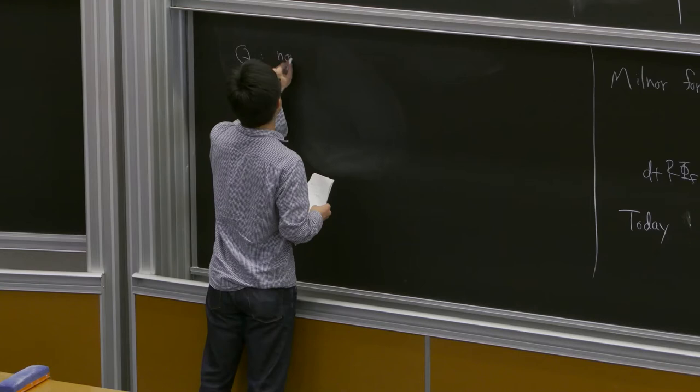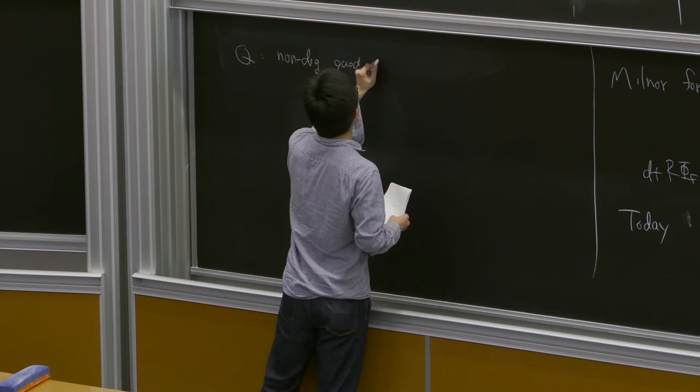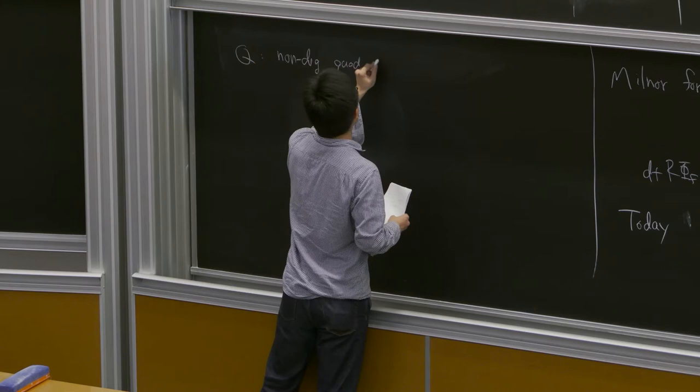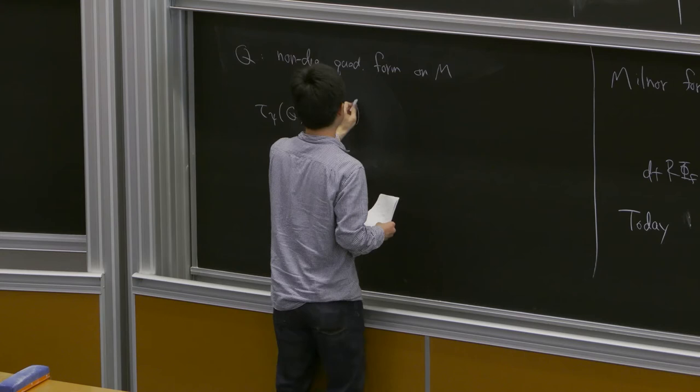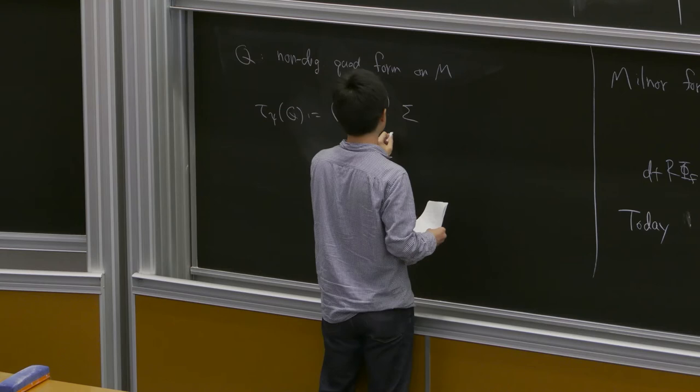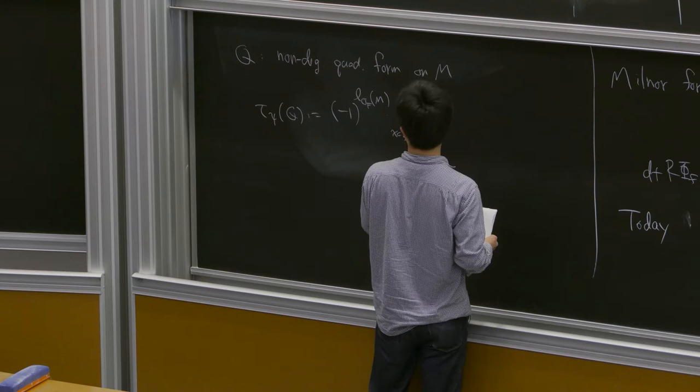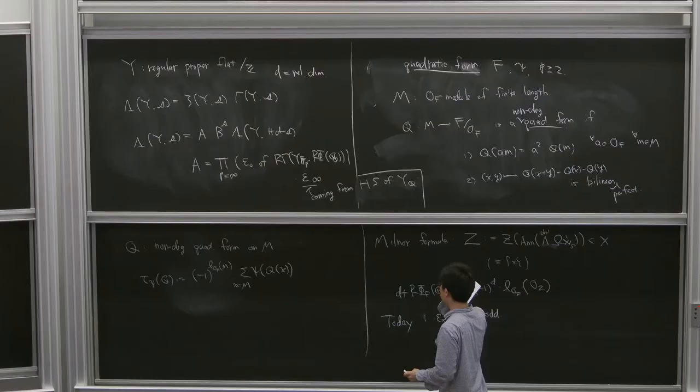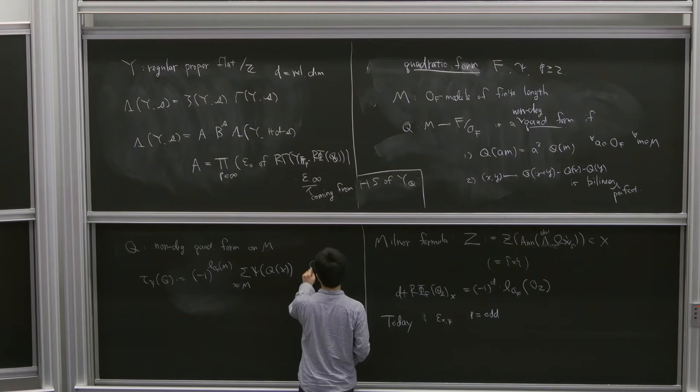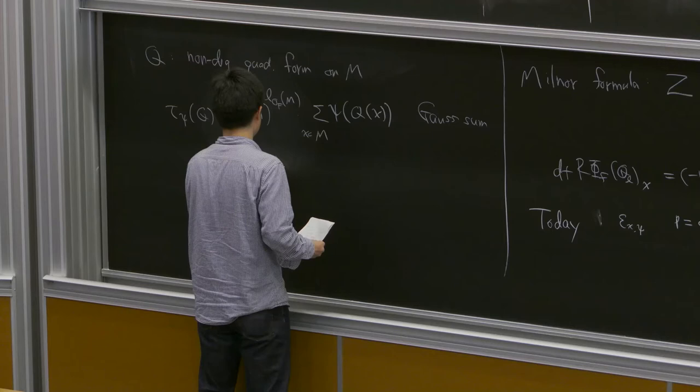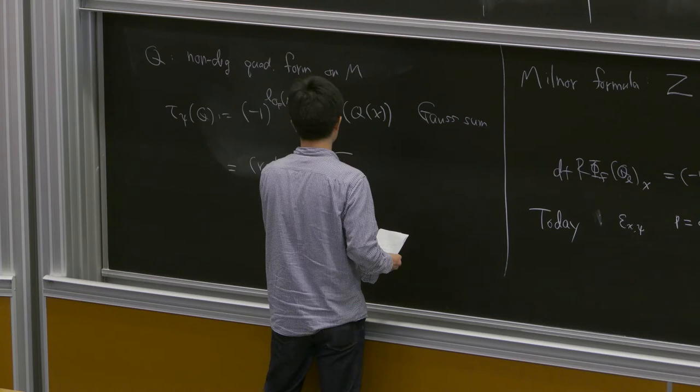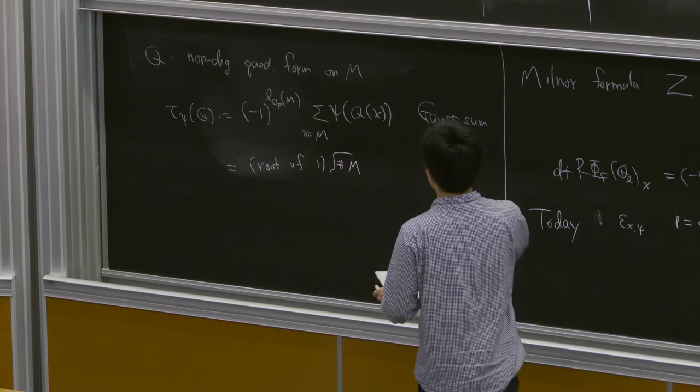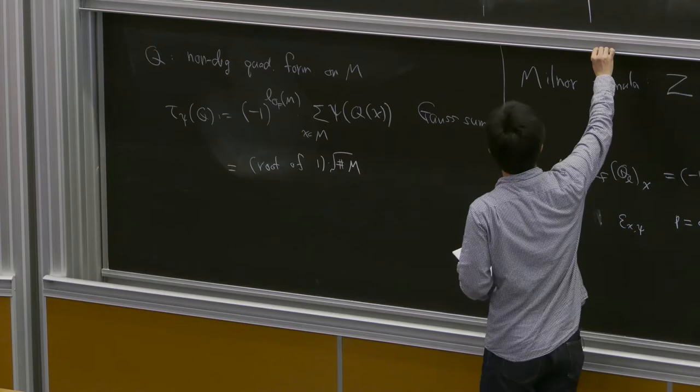So let Q be a non-degenerate quadratic form on M. Then we define the Gauss sum epsilon of psi Q to be this sum over M of psi of Q of m. This is equal to the square root of the cardinality up to a root of unity.